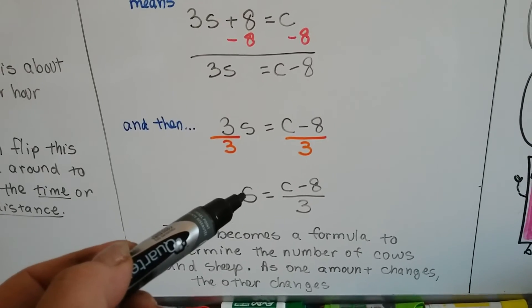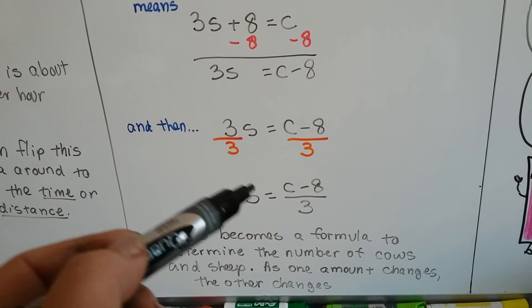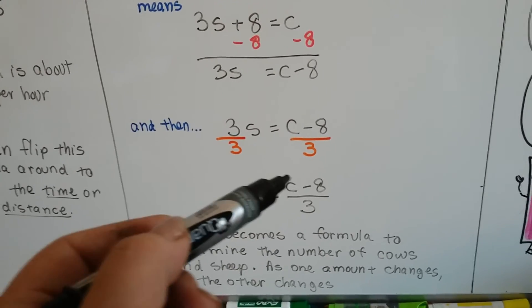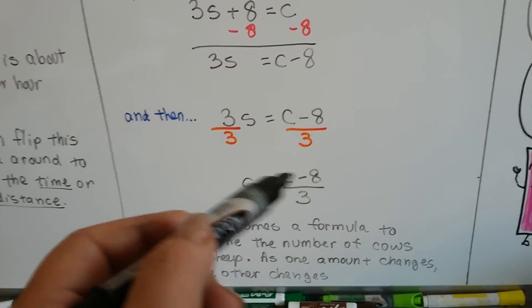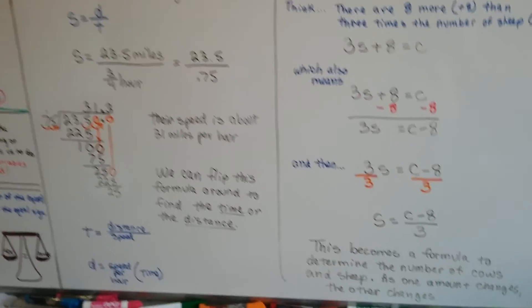So if you had 20 sheep before and 25 cows you could use this formula if you have 30 sheep and 40 cows. It would just keep changing and you could keep getting the answer. So that is a literal equation.